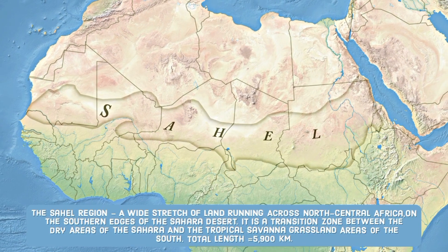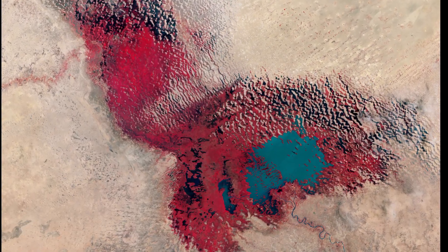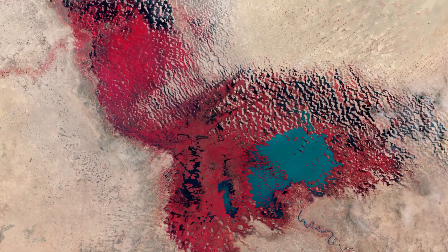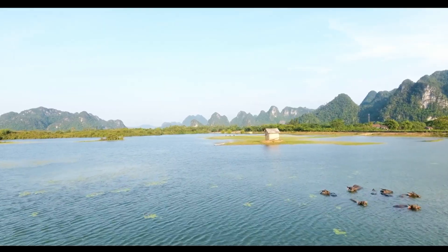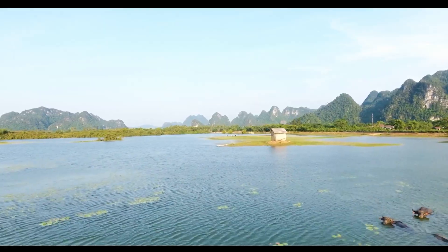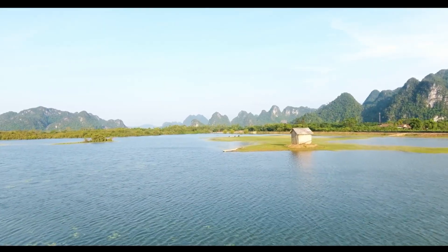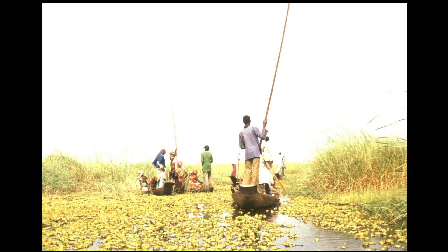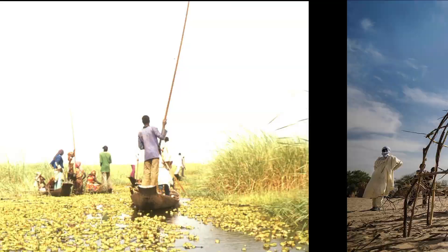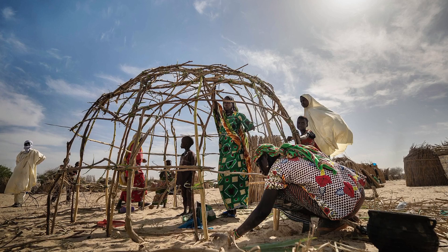Situated in the Sahel region, Lake Chad is a shallow freshwater lake with an average depth of only 1.5 meters. Its surface area varies from 1,500 square kilometers to 2,000 square kilometers depending on rainfall and other factors. Lake Chad is a crucial source of water for more than 20 million people that live in its surrounding area.